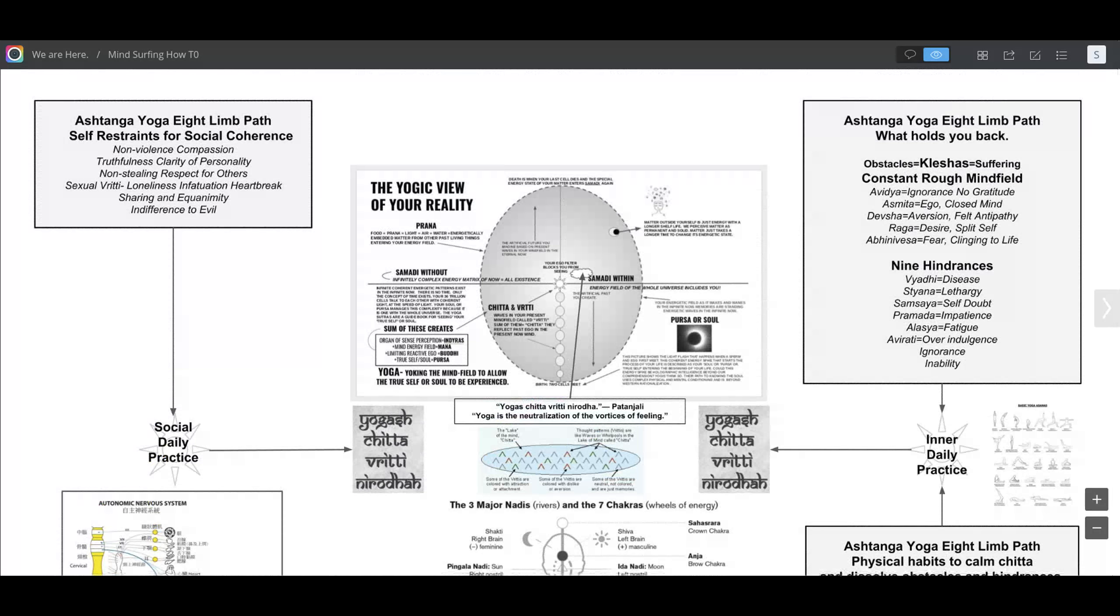To do that, you're given a certain amount of self-restraint: non-violence, compassion, truthfulness and clarity of personality, non-stealing and respect for others, sharing and equanimity, and indifference to evil.